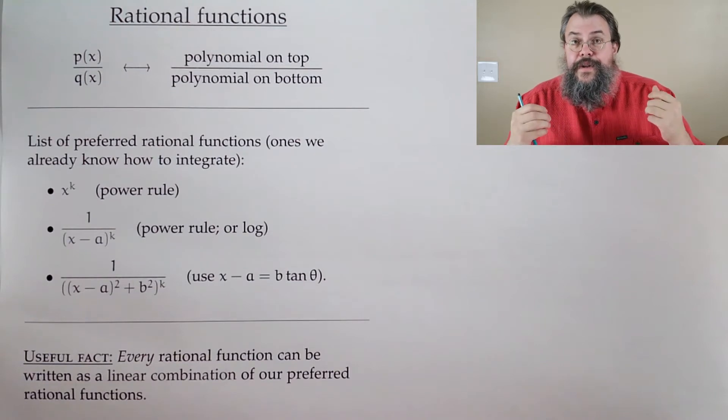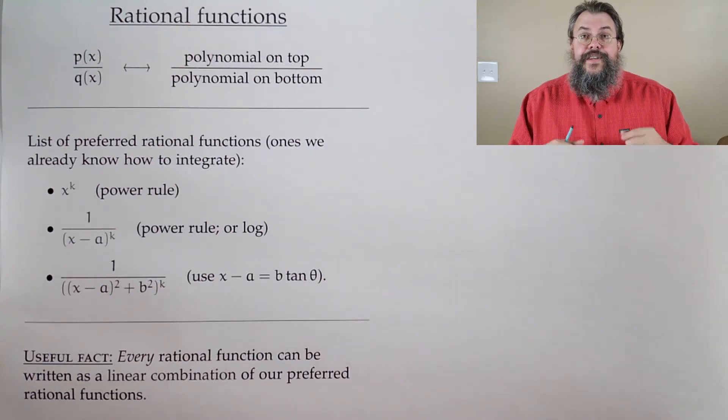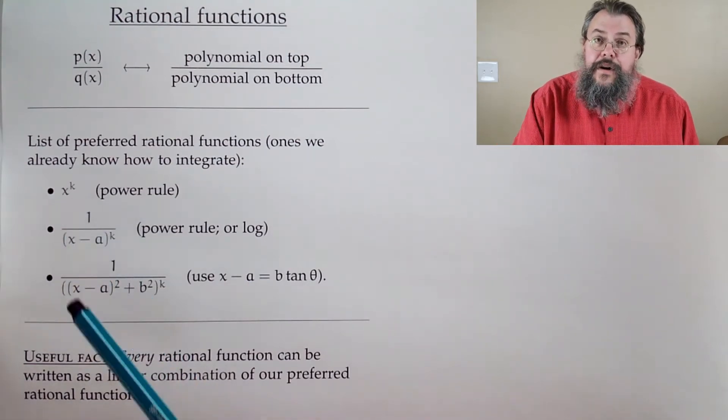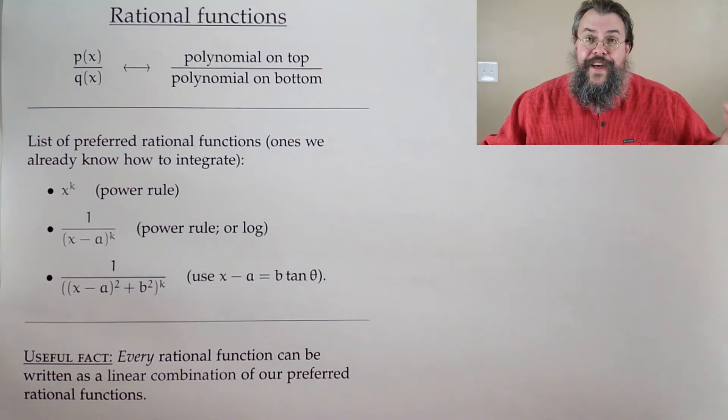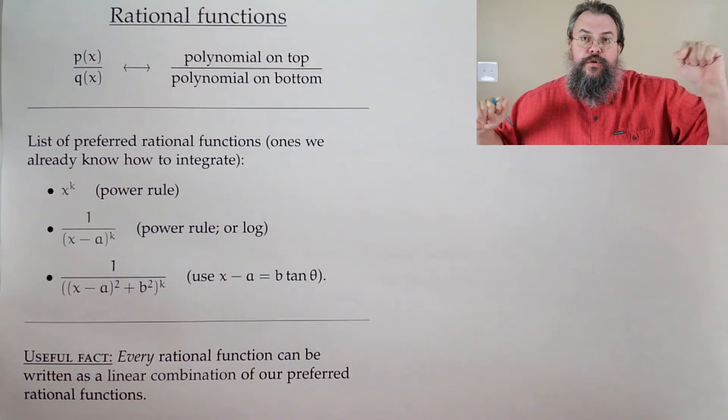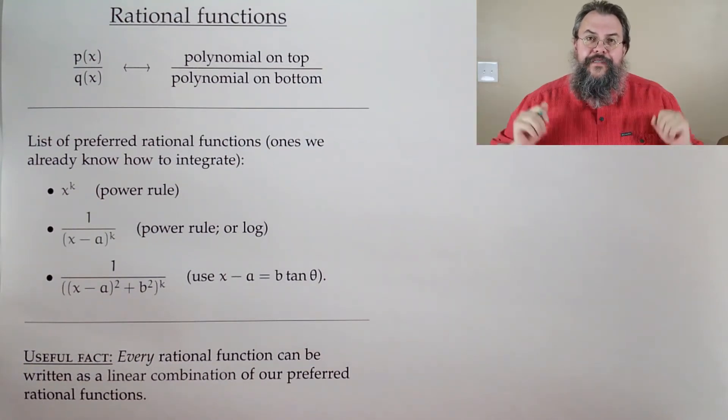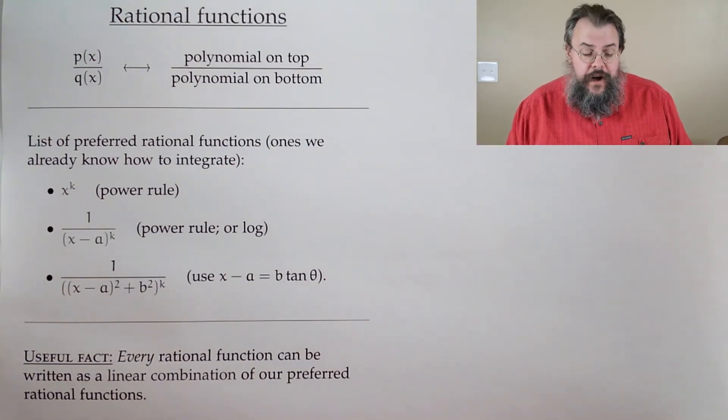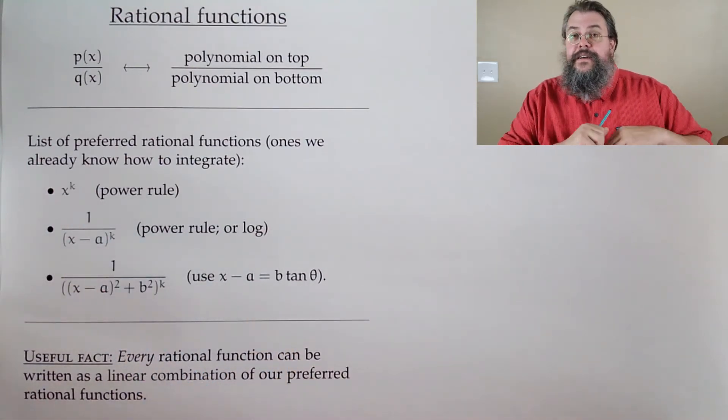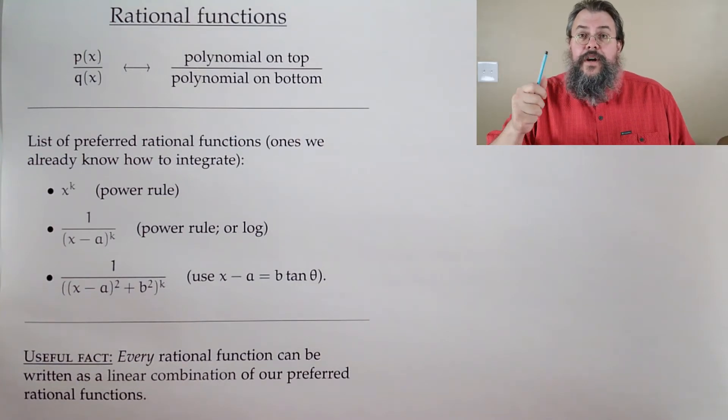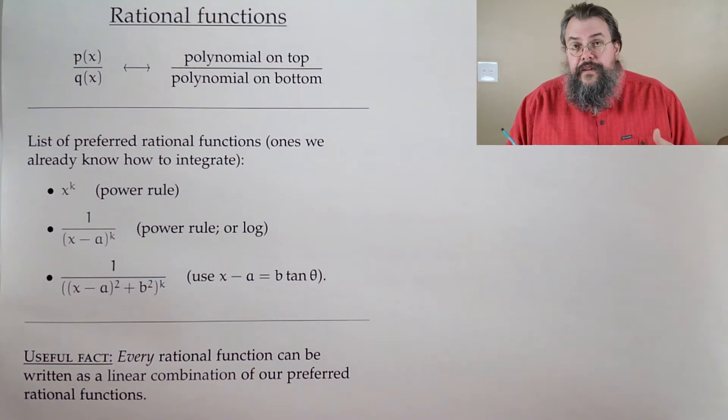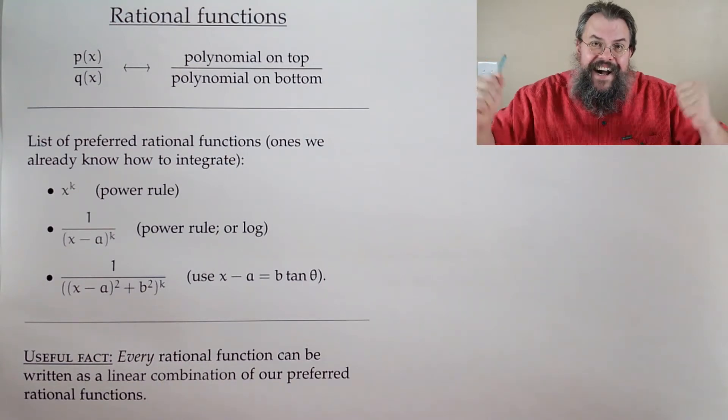Do we have rational functions that we like? The answer is yes. There's a couple of them. x to a power, we love that. x squared, x to the 10th, x to the 172. And not far off are 1 over something like (x-a) to a power. We can handle that. If it's 1 over (x-a), that's a natural log. If it's 1 over (x-a)^2, it's like (x-a) to the minus 2, power rule again.